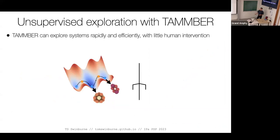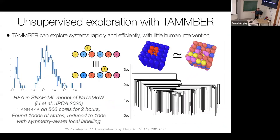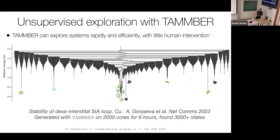When you throw computational resources at this problem, you can move away from simple model systems and look at complicated diffusion in alloys, or with Cosmin's group at CEA Saclay — published in Nature Communications about a month ago — we looked at these complicated structures found in irradiated materials that have large influence on aging under irradiation. With about 2,000 cores for six hours, we found a very large network of states with many transitions. These aren't just random states — they have kinetic relevance because they're produced during dynamics.